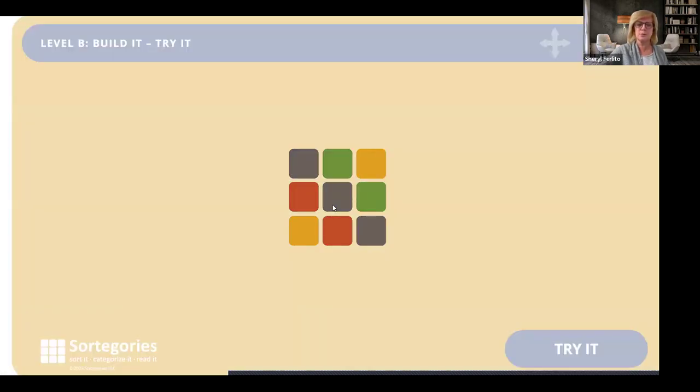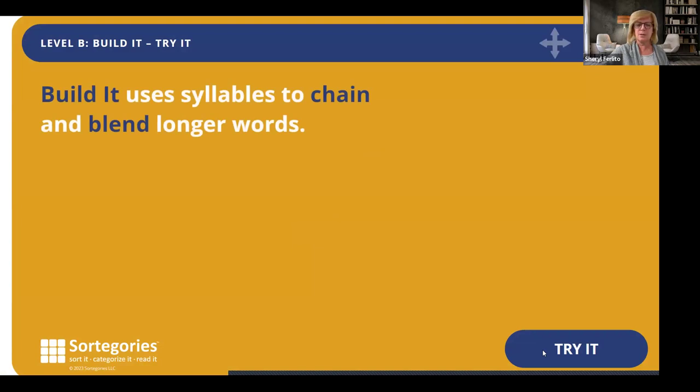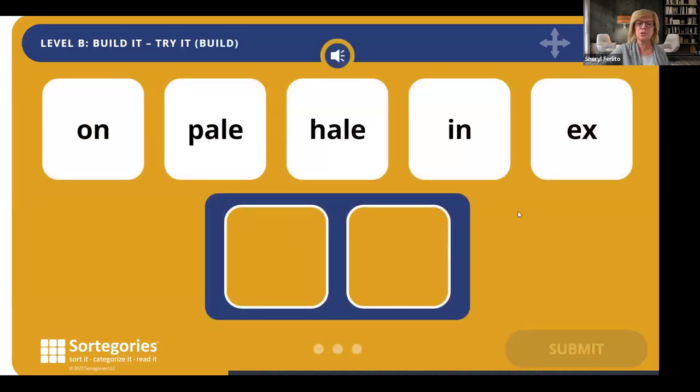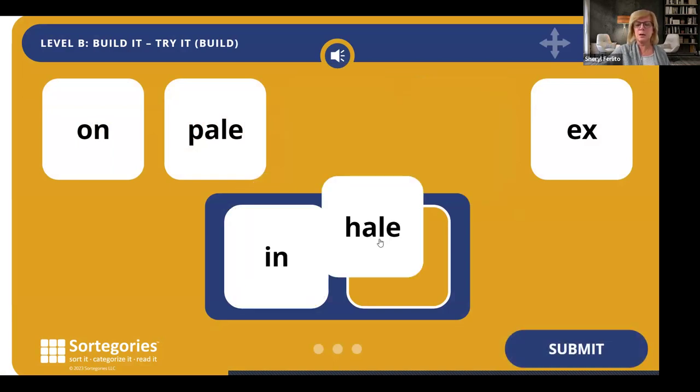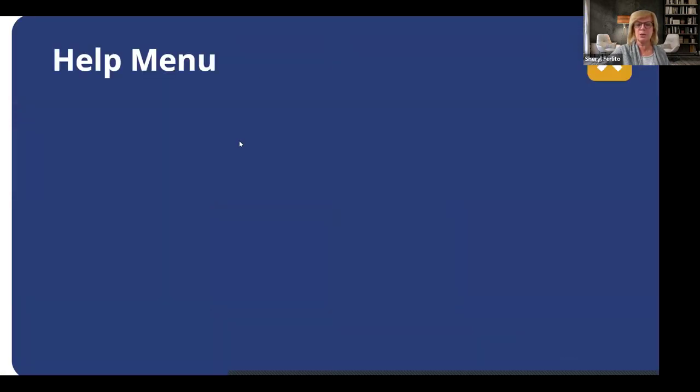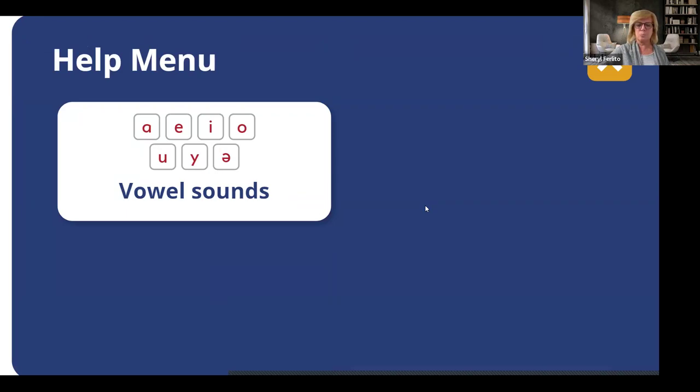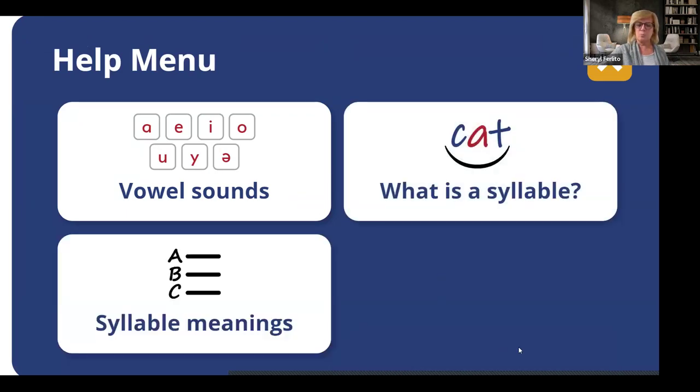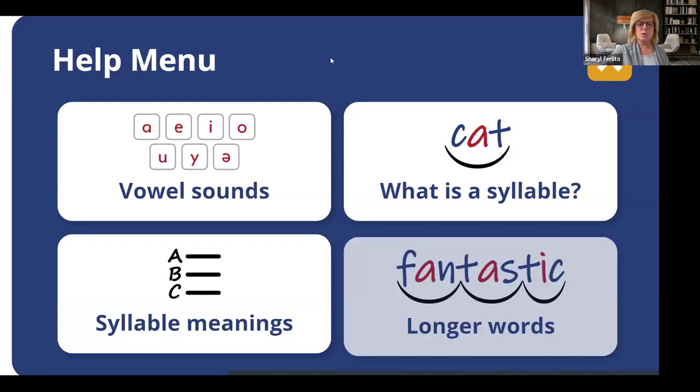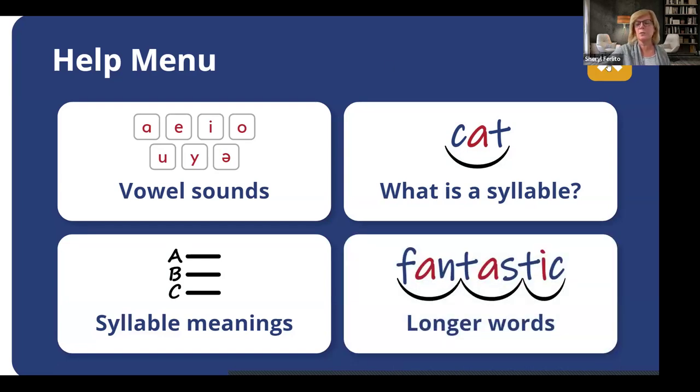This is word building by syllable in level B, showing how level A grows up. I'm going to click through this to get through it. Build 'inhale.' So I can build now by syllable. In. Hale. If I have questions about building by syllables, I can get information. Select an option. Menu. Vowel sounds. What is a syllable? Syllable meanings. Longer words. This is where I can go for help. I can go for help as a teacher, as a parent, or as a student.